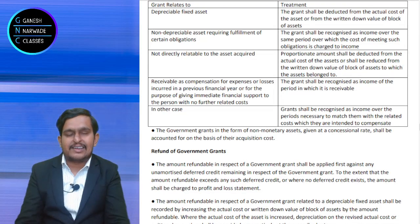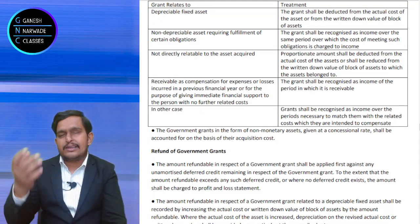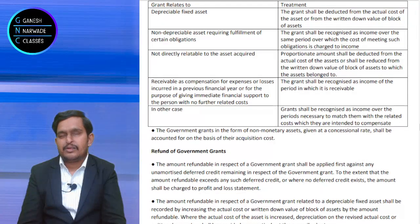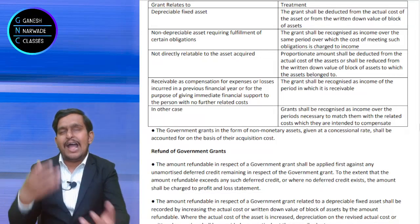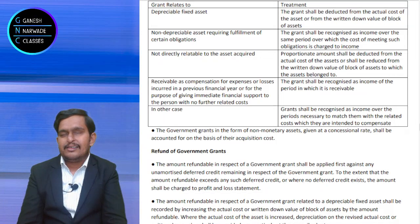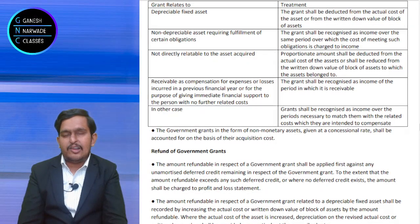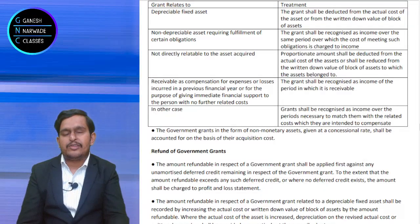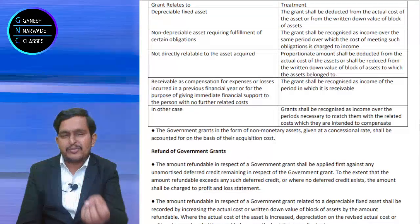Sometimes you do not satisfy the conditions, and you have to reimburse the grant to the government. How should the treatment be done for income tax purpose? When we got the grant for a depreciable asset, we reduced it from the actual cost. Now, when we are paying it back, we should add it back to the actual cost or WDV. In all other cases, till now we considered it as income. Now, because we are repaying it, our money is going out — it is expenditure for us. So, we will treat it as expenditure, i.e., a deduction.